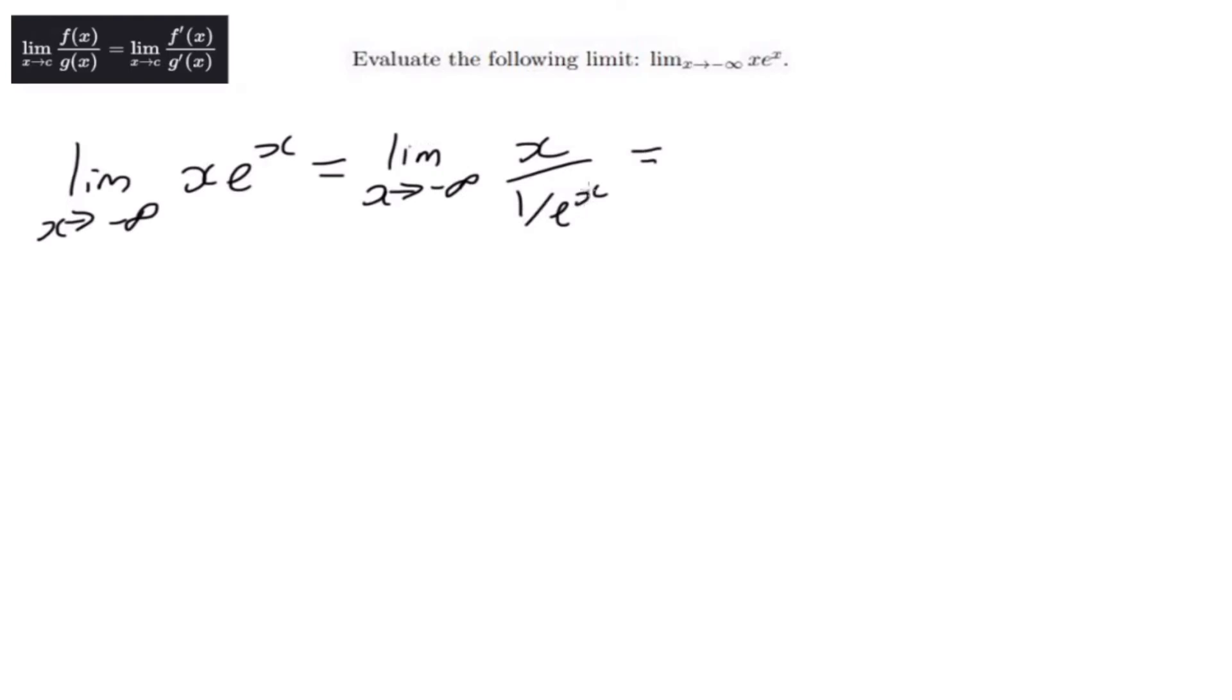And we know that 1 over e to the x can be written as something a bit easier to understand and to differentiate when we get to it: e to the minus x.